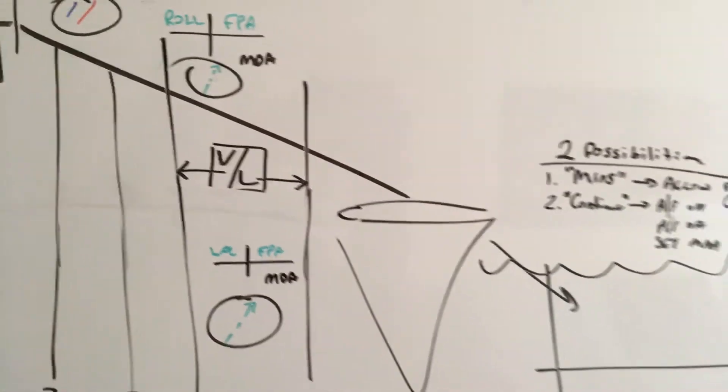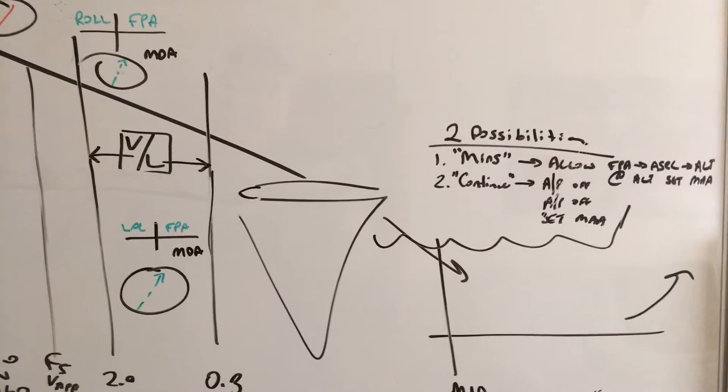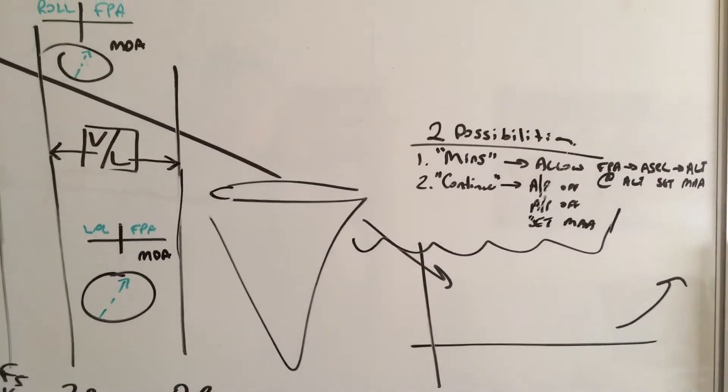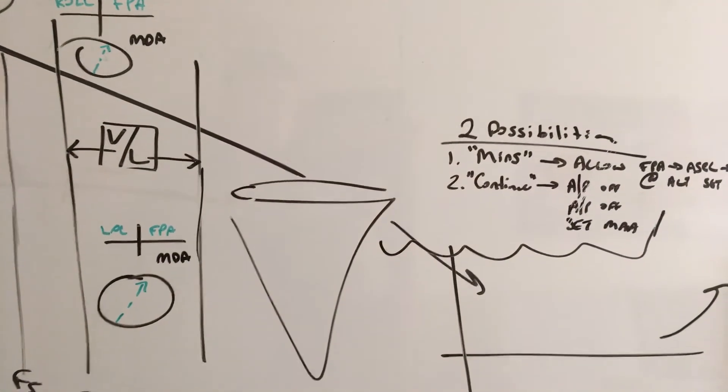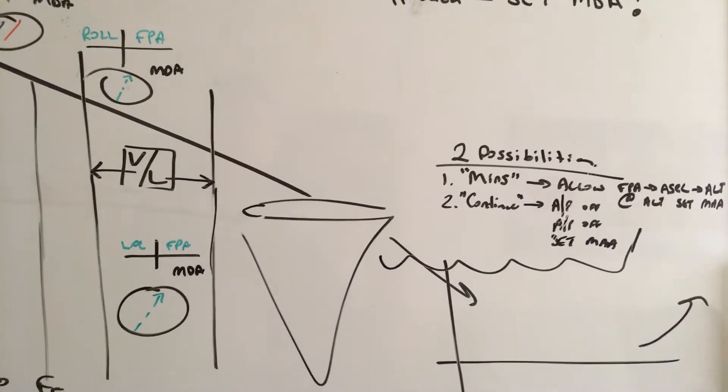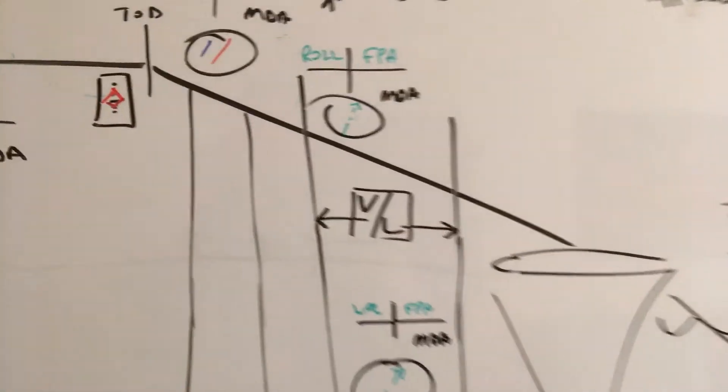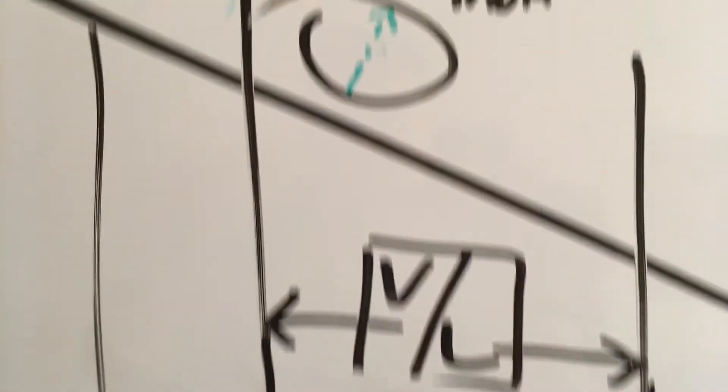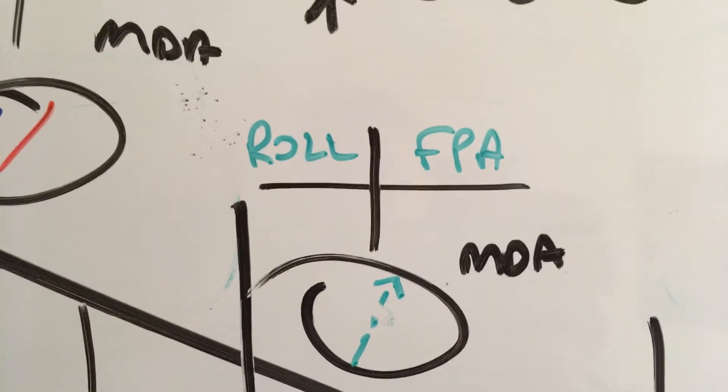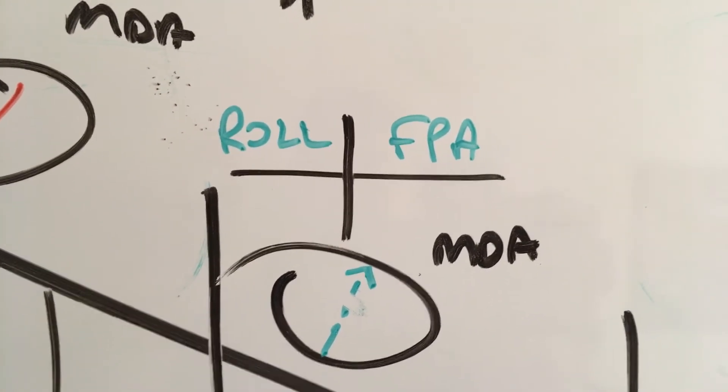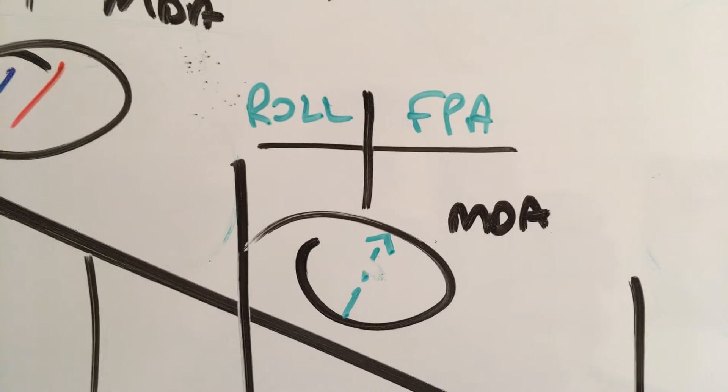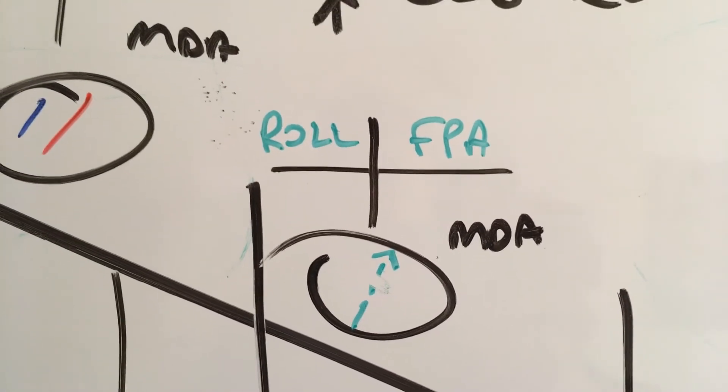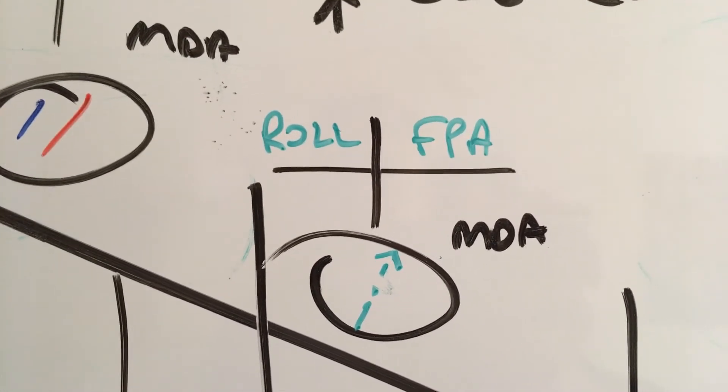Now we need to be in the source for the approach which we're shooting. That would happen to be a localizer, so we need to transition to the world of the signal or the radio. As a consequence, you'll enter basic lateral, basic vertical, which happens to be rolling FPA. It's a consequence of the transition from the world of the FMS to the world of the radio or the signal.